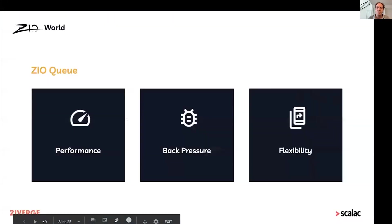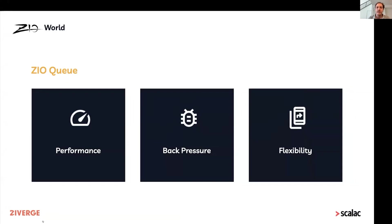The queue in ZIO in particular is probably the most underappreciated data structure in ZIO 1.0. It's incredibly high performance and supports back pressure on both producers and consumers. For having such high performance, it also has a very flexible API where you can create different kinds of queues: bounded, unbounded, sliding, and dropping queues. You can create queues that transform their inputs or outputs, or filter them — an incredible amount of flexibility combined with a very performant API.